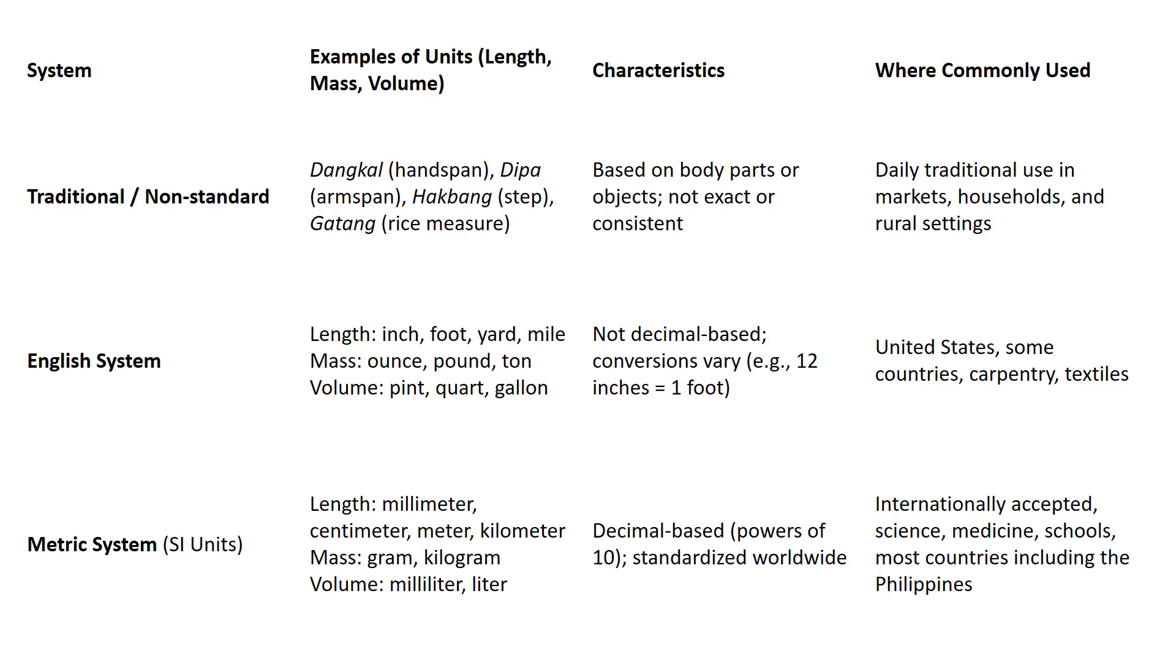So this is the comparison of the traditional, English system and metric system. In units, so dangkal, handspan, dipa, arm span, hakbang, step, gatang, rice measure. Sa English system naman, that is inches or inch, foot, yard, mile, mass, ounce, pound, ton, volume, we have pint, quart, gallon.